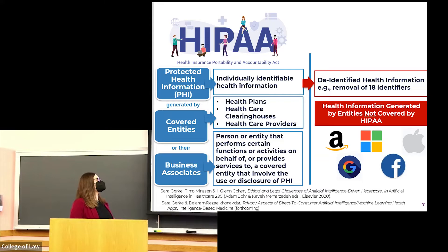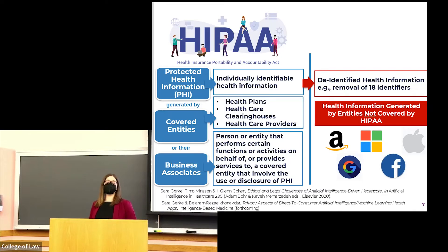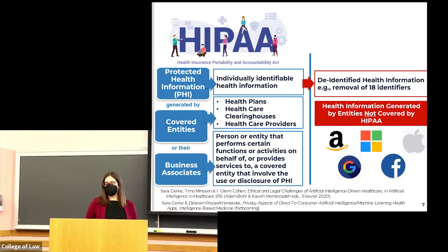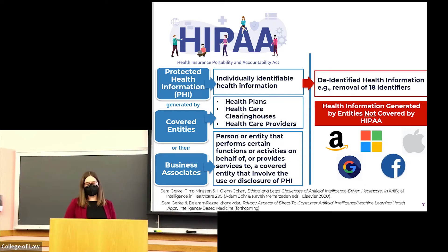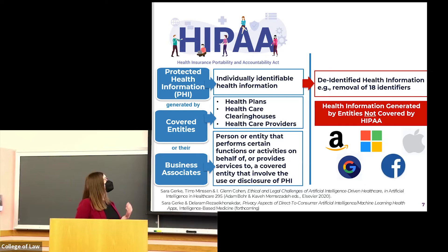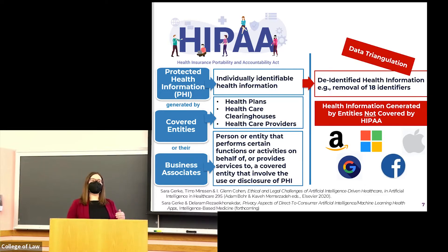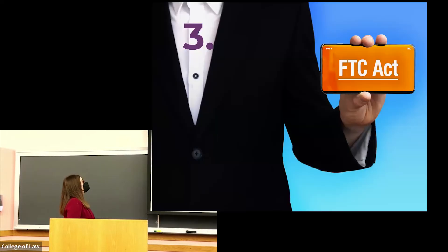A different problem with HIPAA is the reliance on de-identification as a privacy strategy. When hospitals share data with Google and others, they often make sure the data is de-identified. De-identified health information can usually be shared freely for research and commercial purposes without restriction. De-identification is done by removing 18 identifiers such as names, social security numbers, and biometric identifiers of the individual or related household members or employers, and the covered entity must also not have actual knowledge that the information could be used to identify the individual. The problem is that HIPAA may not adequately protect patient privacy because of data triangulation — a person may be de-identified as to one data set but easily re-identified through combination with another available data set.